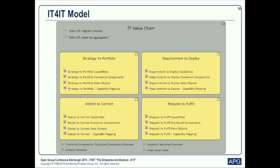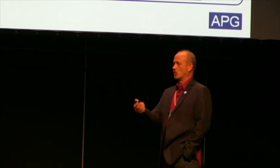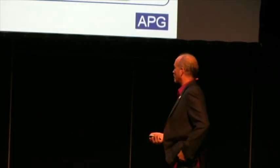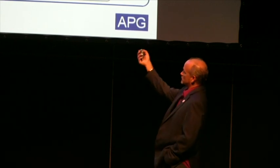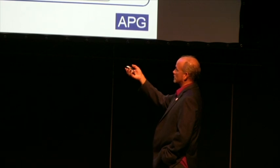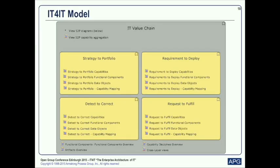One of the nice things about the IT for IT reference architecture is that we've been taking a model-driven approach. The IT for IT model in Sparx Enterprise Architect is a work in progress in terms of making it available to the general public, but one of the privileges of membership is getting access to it. Having the reference architecture in a PDF is better than nothing, but why should everybody have to type it all over again to use it in enterprise architecture toolsets? Here we see the four value streams and chunks of model content around capabilities, functional capabilities, data objects, and capability mapping.